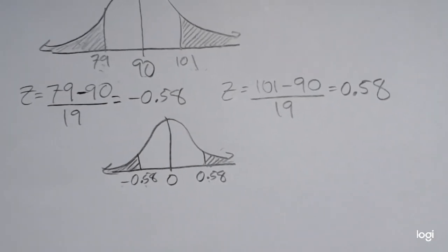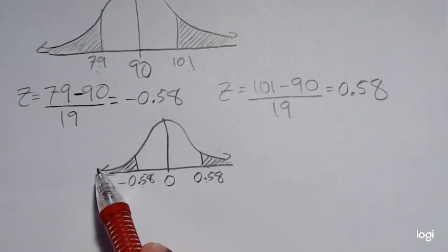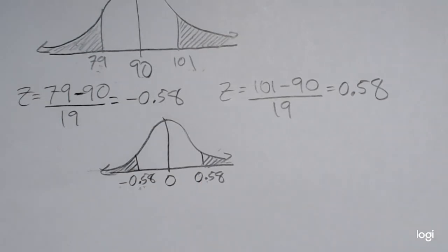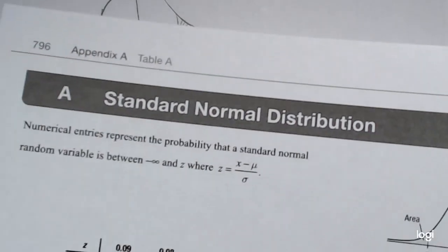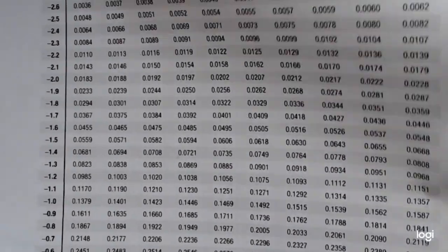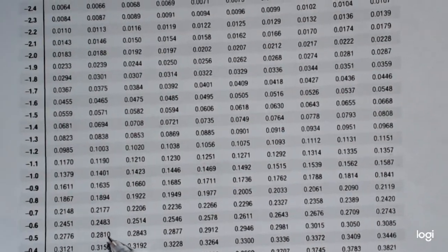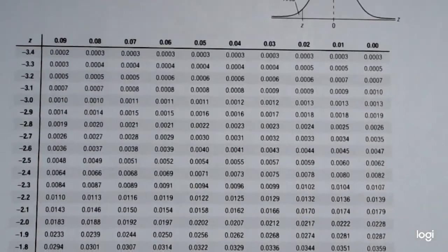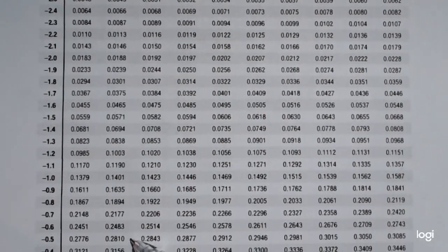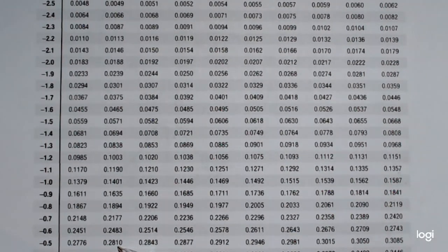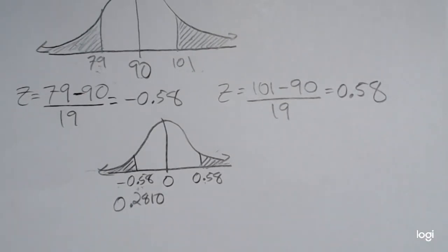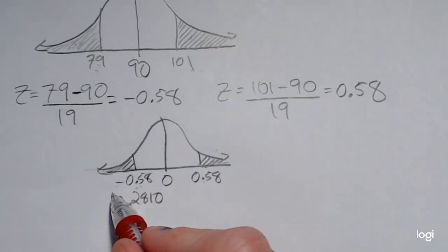So I only need to find one of those tails and double it. Because the table reads cumulatively left to right, it's easier to find this lower tail first. Going to the page that corresponds to negative Z-scores, going down to negative 0.5 and over to 0.08 — that's the second column. That area is 0.2810. So that's going to be this tail area right here.